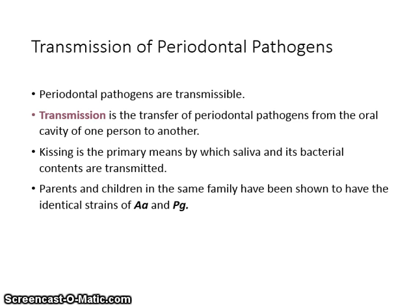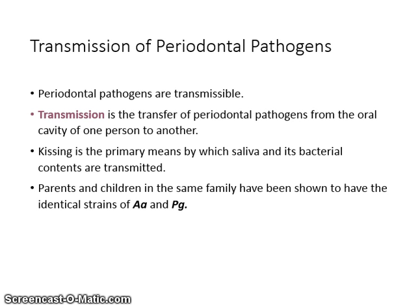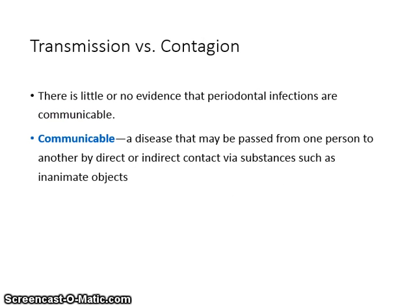Periodontal pathogens are transmissible. Transmission is the transfer of periodontal pathogens from the oral cavity of one person to another. Kissing is the primary means by which saliva and its bacterial contents are transmitted. Parents and children in the same family have been shown to have the same identical strains of AA and PG. In cases where both spouses have periodontal disease, one spouse will not recover unless both spouses are treated. Despite the fact that the disease is able to be transmitted, there is little or no evidence that periodontal infections are communicable. Communicable means that a disease can be passed from one person to another by direct or indirect contact via substances such as inanimate objects.